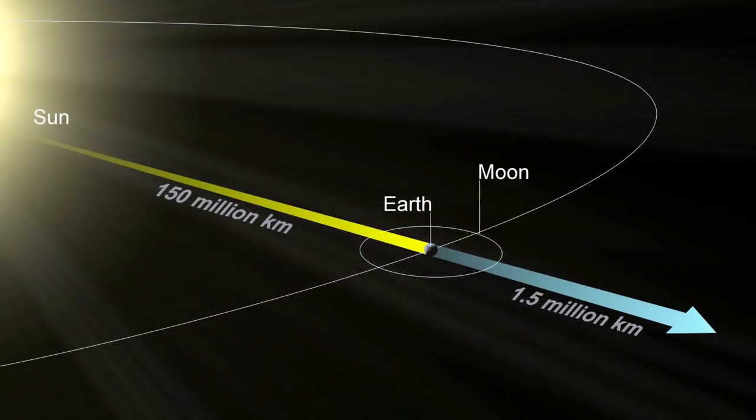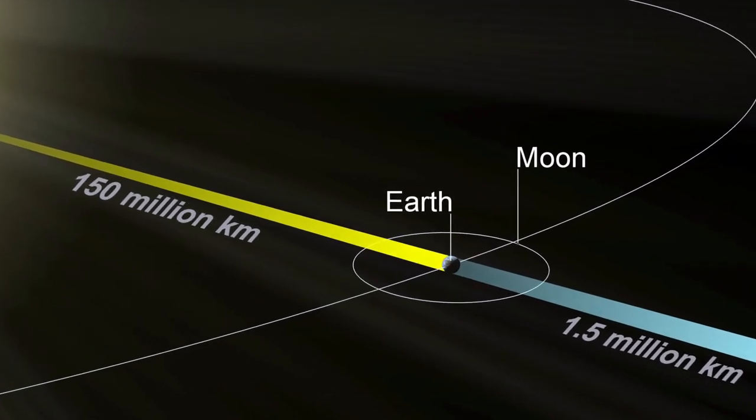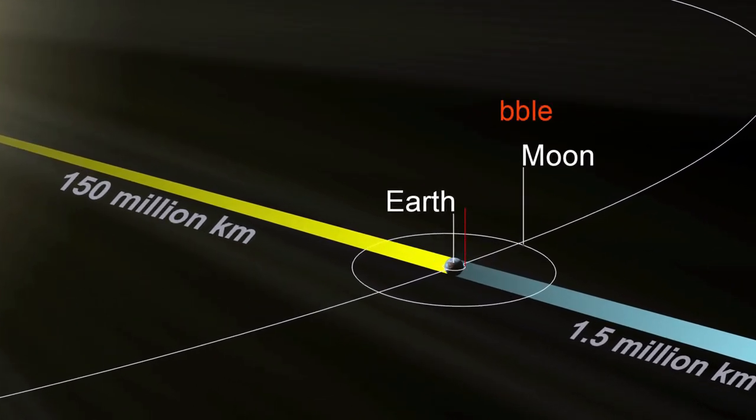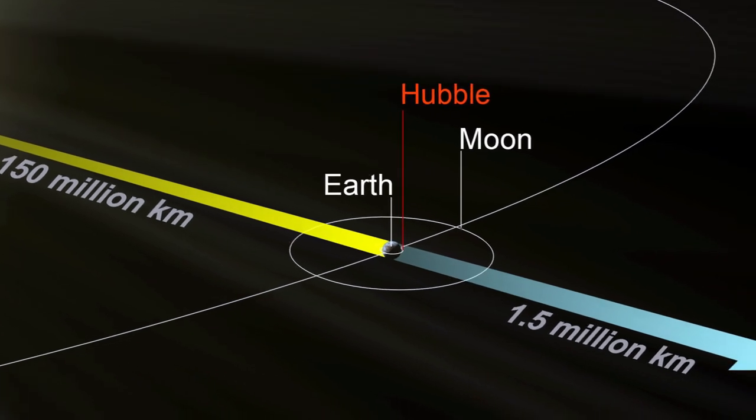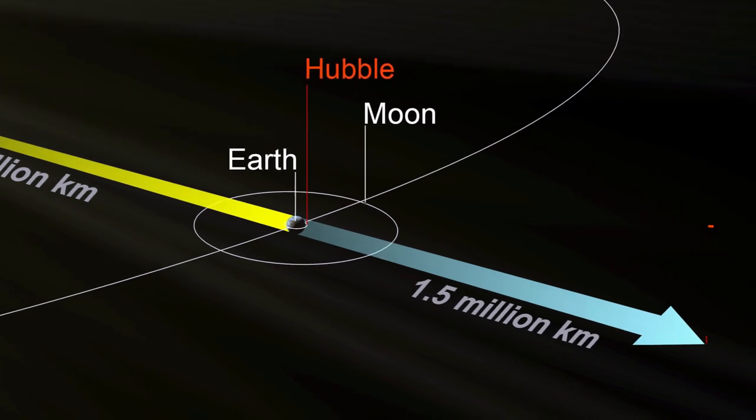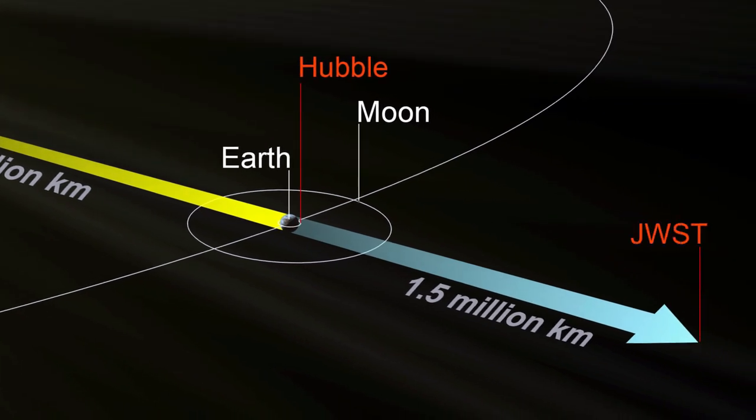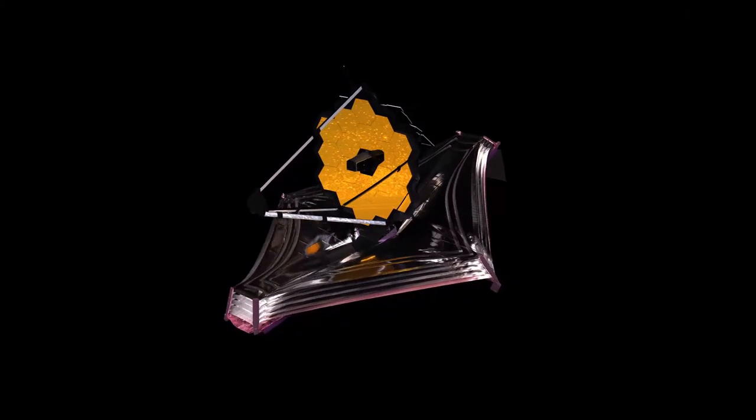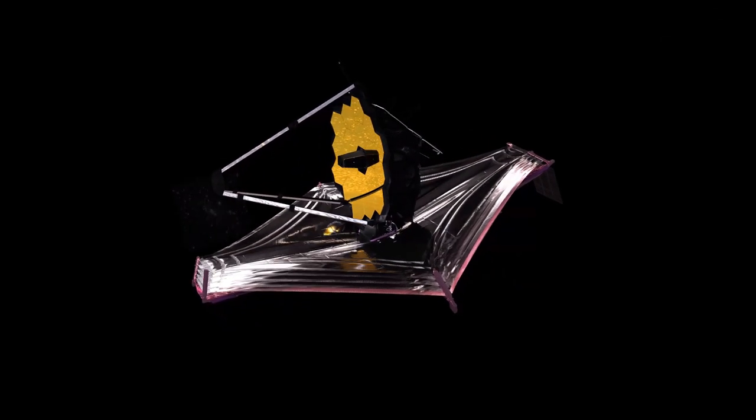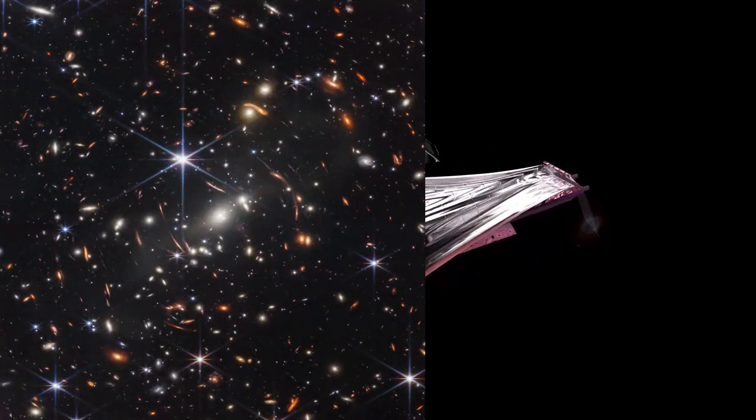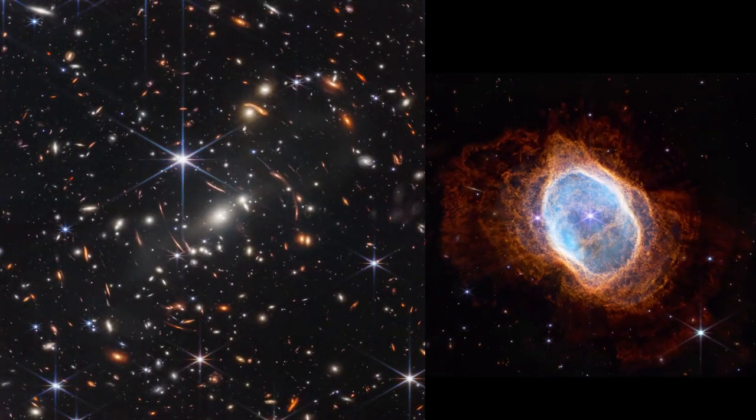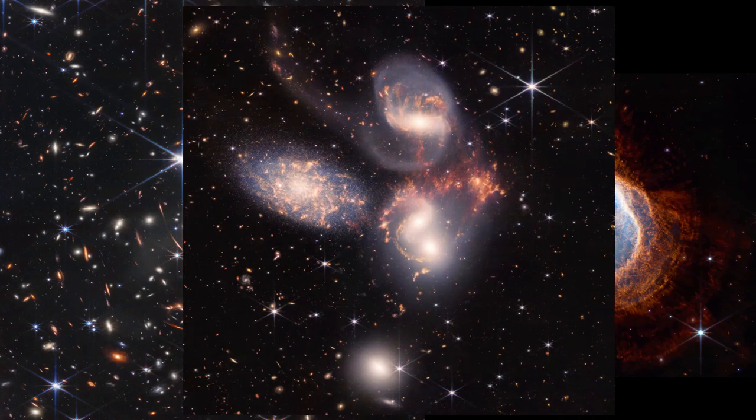JWST operates 1.5 million kilometers from Earth in a halo orbit, circling around a point in the space known as Sun-Earth L2 Lagrange point. It's roughly four times farther than Moon. It has already given us the three spectacular images of Deep Space. We never know what it will find now.